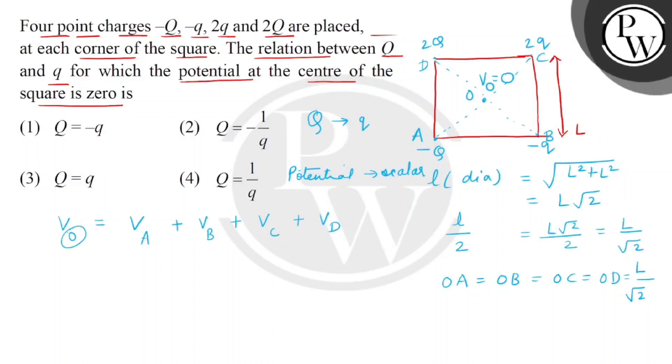So, this is equal to K multiplied by minus Q divided by the length OA plus K multiplied by minus small q divided by OB plus K multiplied by 2q divided by OC and plus we can take the last term as K multiplied by 2Q divided by OD.